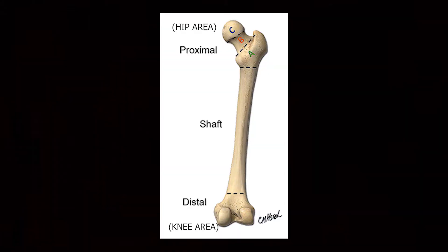To properly understand proximal femoral fractures and their different types, you have to understand the anatomy of the femur. The femur is the long bone that starts from the top and extends down to the knee joint.